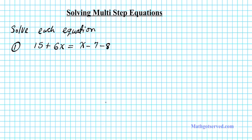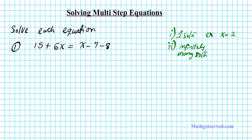Let me give you an example of how your answers will look in the three cases. For case one, if you have one solution, your answer is going to look something like x equals a number, like x equals 2. You can also have infinitely many solutions — your answer is going to look like 4 equals 4. You will end up with an identity, a true statement, with no variables of any sort present in your final step.